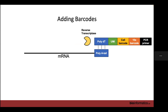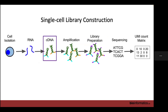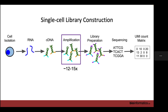Once hybridized, a reverse transcriptase primer creates a cDNA strand from our mRNA and adds a bunch of C's at the end. We then add a switch oligo that hybridizes to those poly-C's and gives reverse transcriptase a primer to do second-strand synthesis. We then have our cDNA with PCR primers and can amplify it — 12 to 15 times with PCR. Any noise in PCR efficiency gets amplified as well, which is why we have UMIs: to remove amplification noise by counting UMIs instead of reads.